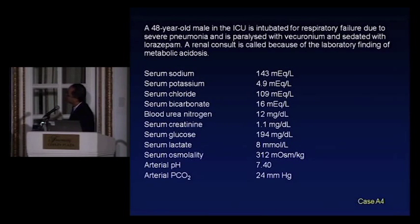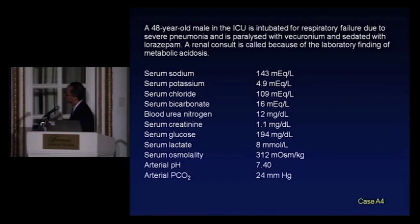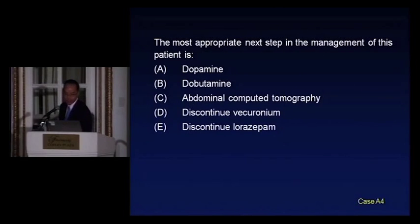A 48-year-old male in the ICU is intubated for respiratory failure due to severe pneumonia, paralyzed with vecuronium and sedated with lorazepam. A renal consult is called for metabolic acidosis. Serum bicarb 16, sodium 143, chloride 109, lactate 8, serum osmolality 312, pH 7.4, PCO2 24. What's the next step — dopamine, dobutamine, CT scan of the abdomen, stop the vecuronium, or stop the lorazepam?